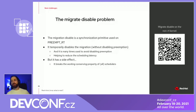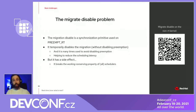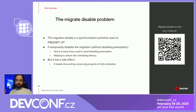Migrate-disable is a synchronization mechanism from PREEMPT_RT that temporarily avoids a task being migrated from one processor to another. It is good because it avoids disabling preemption that causes scheduling latency. On the flip side, it breaks one assumption we use in schedulers, which is being work-conserving — like SCHED_DEADLINE assumes it is work-conserving.